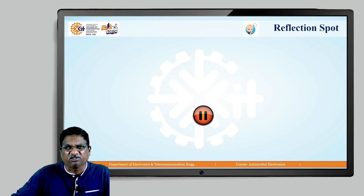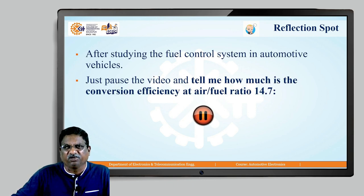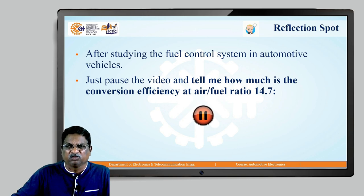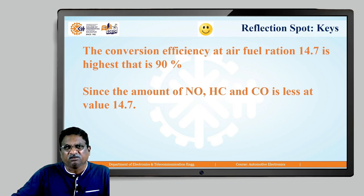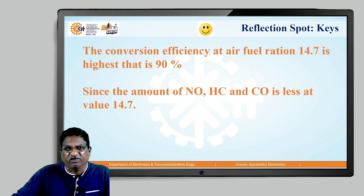Here is a reflection spot: after studying the fuel control system in automotive vehicles, pause the video and tell me — what is the conversion efficiency at an air-fuel ratio of 14.7? The answer is that the conversion efficiency at air-fuel ratio 14.7 is highest, at 90 percent, since the amounts of NOx (nitrogen oxide), HC (hydrocarbon), and CO (carbon monoxide) are minimized at that value.